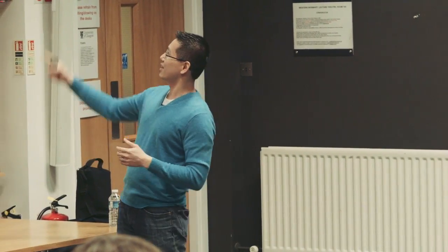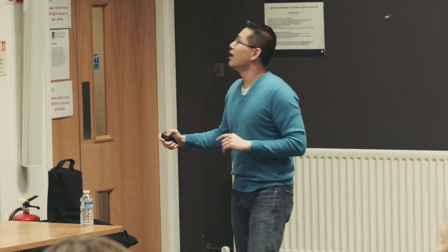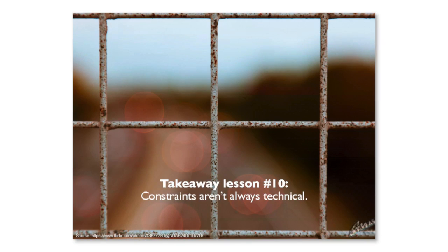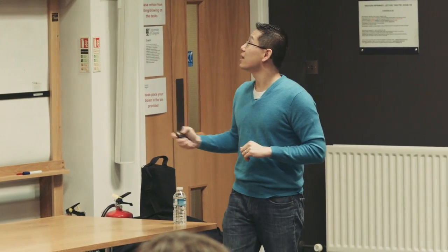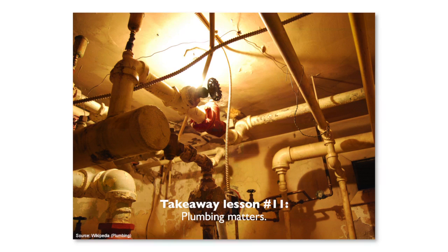In case you're going to fall asleep anyway, let me start by giving you the lessons upfront. Takeaway lesson number one is shared by a famous fellow: make things as simple as possible, but no simpler. Second lesson — we count in binary here — constraints aren't always technical. It seems a little odd; I'll offer context in a minute. And the third lesson is that plumbing matters. This might also seem odd, but I'll come back to it and it should make sense at the end.